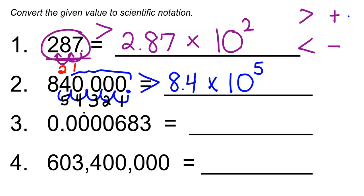Number 3: we have 0.0000683. That's a pretty small number — way less than 1 — so we need to move our decimal point until we have a number between 1 and 10. We do have a decimal point, so we start from there. This time, instead of moving left, we move right because we need to make our number bigger. Moving it once, twice, three times gives us 0.683 — still not between 1 and 10. Moving again gives us 6.83, which is between 1 and 10.